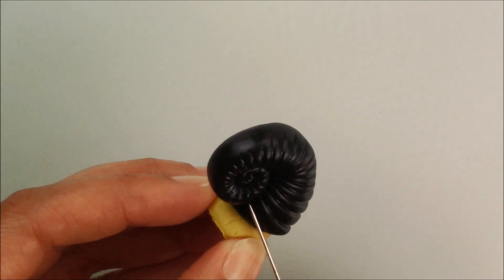Next, I used a small dotting tool to lightly trace some lines on the shell. You don't have to do this all over, mainly where you have space.